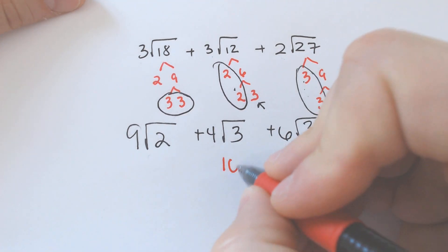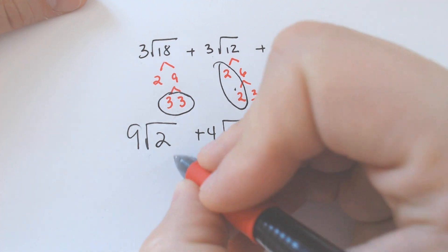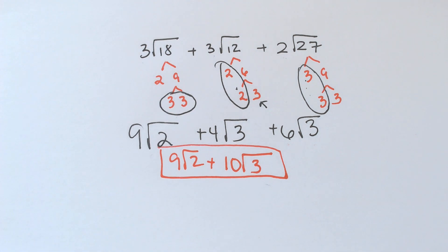So the only thing we can do is add the 4 and the 6 together to make 10 square root of 3. And that 9 square root of 2 is hanging out for the ride. It cannot do anything. So that is all we can do on that one.